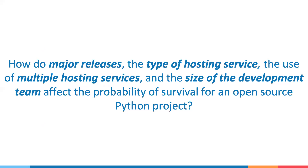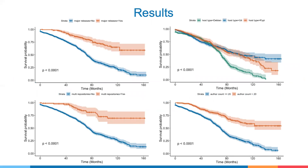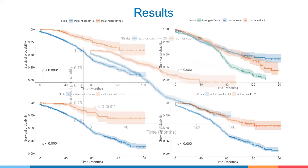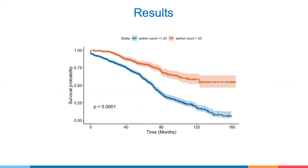Our first research question: How do major releases, the type of hosting service, the use of multiple hosting services, and the size of the development team affect the probability of survival for an open source Python project? We can see the Kaplan-Meier curves for the original set of attributes. The results shown here are extremely similar to the results found by the original authors, as might be expected for a replication. The most significant difference is found in the curve illustrating the effect of author count on a project's survival. This curve has the smallest confidence interval and indicates that having a larger network of developers significantly increases a project's probability of surviving an extended period of time.